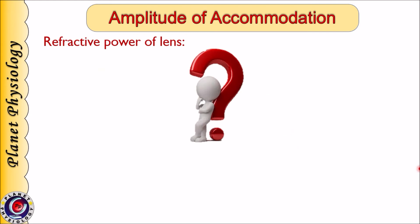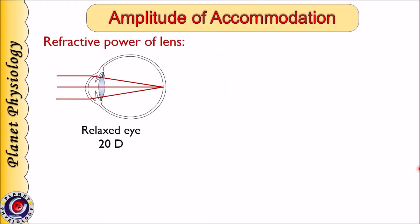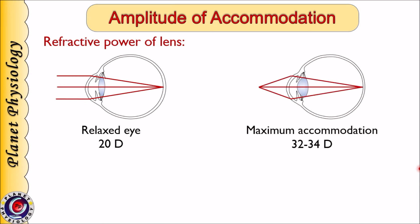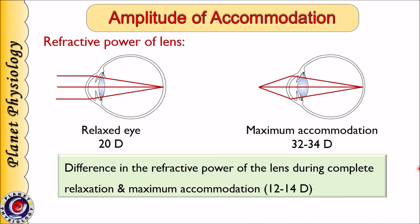The question arises: how much can the lens accommodate? When the eyes are relaxed, refractive power of the lens is 20 diopters. But to see very nearby objects, the refractive power can increase up to 34 diopters. The difference between refractive power during complete relaxation and maximum accommodation is called the amplitude of accommodation. Its value is 12 to 14 diopters — Ganong mentions 12 diopters whereas Guyton says 14 diopters.